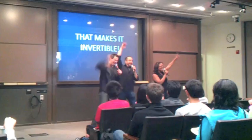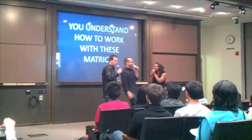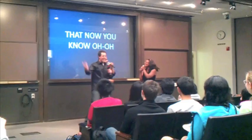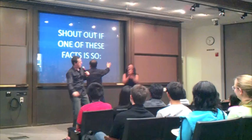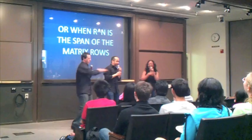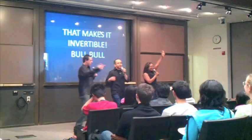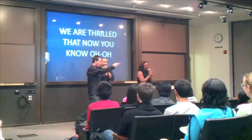It seems that you've got a few of these. You understand how to work with these matrices. Now you know — you're winning. Shout out to fans of these tracks — it's so important. When your matrix's determinant is non-zero, or when the row space is the span of the matrix rows — that's when you know. That makes it invertible. We are thrilled — and now you know. That makes it invertible.